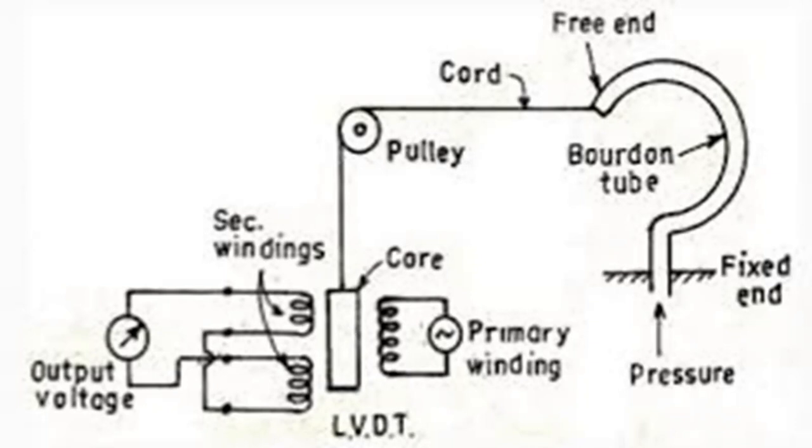Since LVDT is an AC controlled device, there is no electronic component inside it. It is the most widely used inductive sensor due to its high accuracy level. Its electrical output is obtained because of the difference of secondary voltages, hence it is called differential transformer.